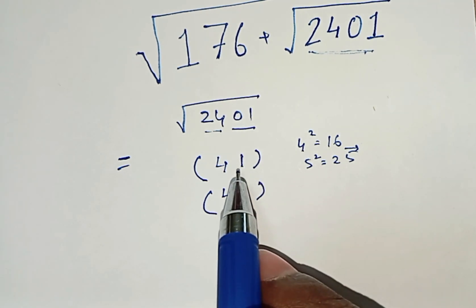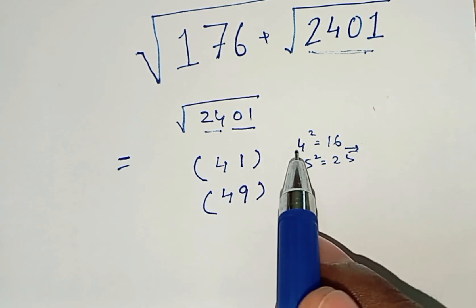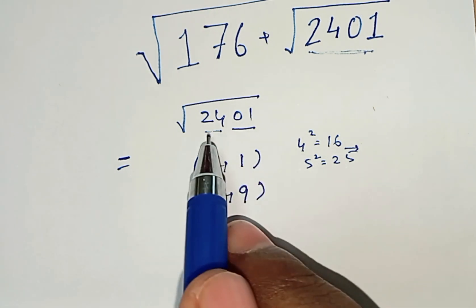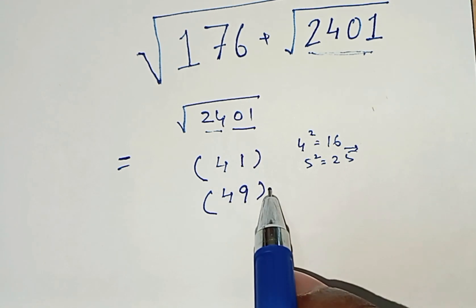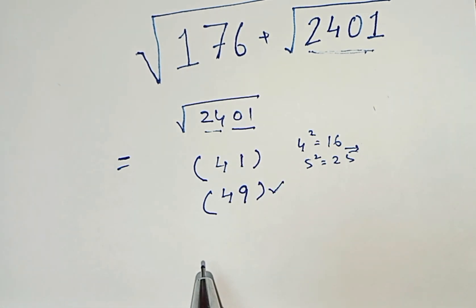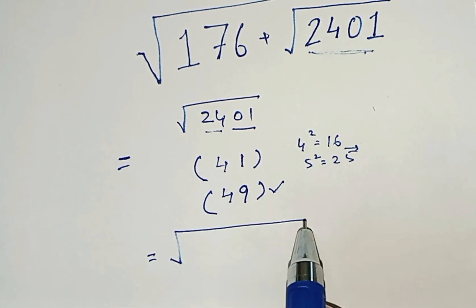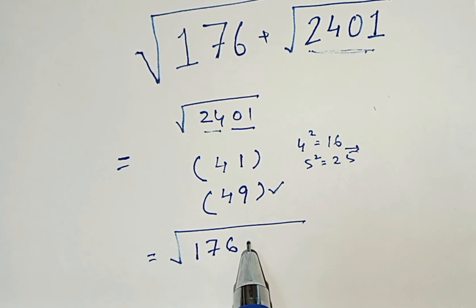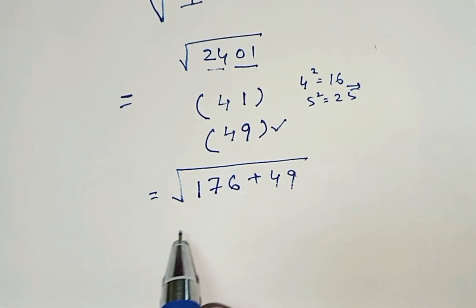Now you have to determine whether the answer is 41 or 49. Since 5 × 4 = 20, and here the group value is 24, which is greater than 20, so 49 will be the answer. Therefore the solution becomes: √(176 + 49).